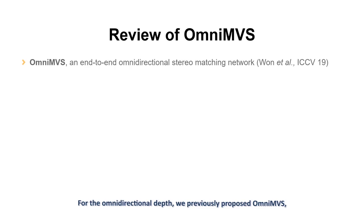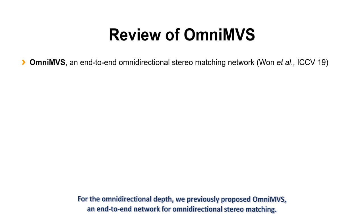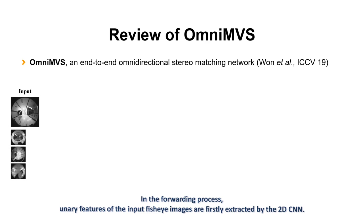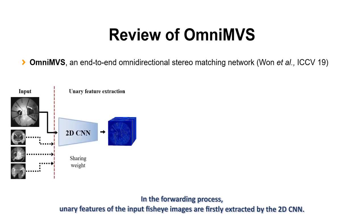For the omnidirectional depth, we previously proposed OmniMVS, a deep neural network for omnidirectional stereo matching. In the forwarding process, unary features of the input fisheye images are firstly extracted by the 2D CNN.